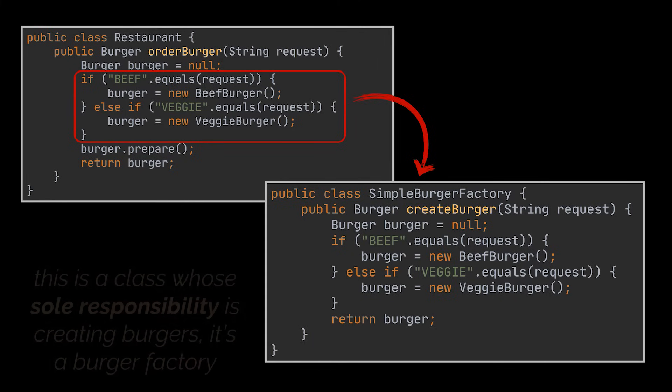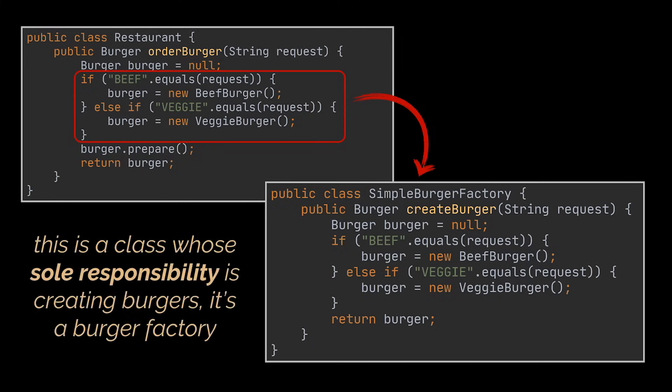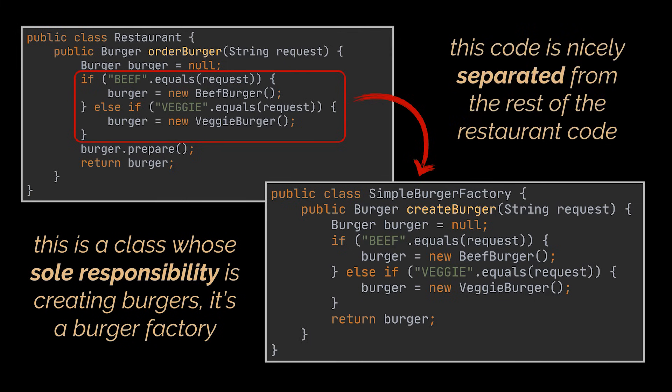separate it into a class called a factory. Why a factory? Because this is a class whose sole responsibility is creating burgers — it's a burger factory. Now, anytime we want to order something from our restaurant, we'll call this method, pass it a type, and after figuring it out, the method will return the requested order for us that implements the burger class. All this code is in one place, nicely separated from the rest of the restaurant code.